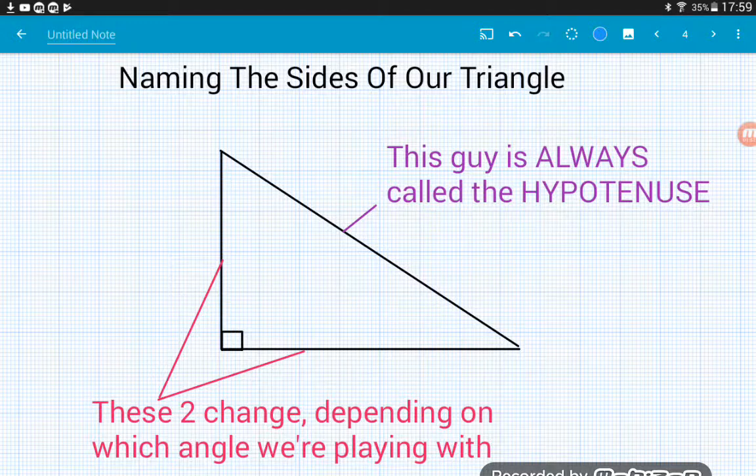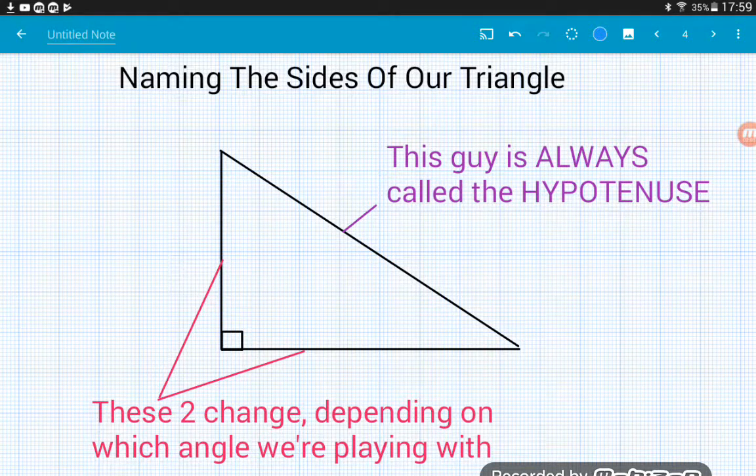So, the sides of the triangle each have their own special name. Now two of the sides change, but this longest guy, the diagonal of the triangle, the side opposite of the right angle, is always, always, always called the hypotenuse.